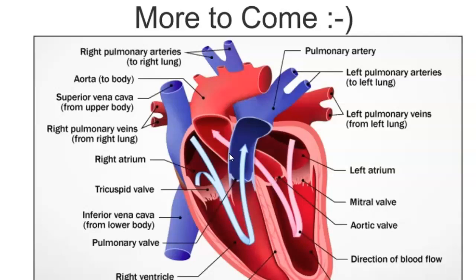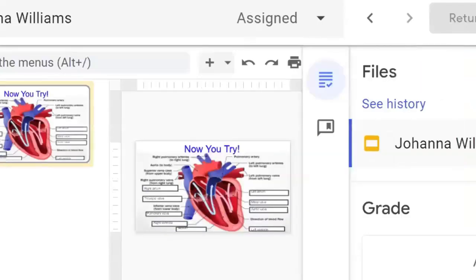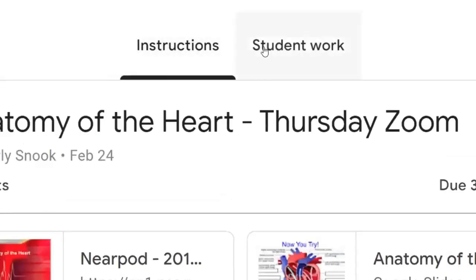Blood is always red — in diagrams they color it blue and red to make it visual. Blue typically represents deoxygenated blood coming from the body. The right side of the heart receives deoxygenated blood, sends it to the lungs to drop off carbon dioxide and pick up oxygen, then it returns. The left side receives oxygenated blood and sends it out to the body. You should be ready to turn in that exit slip.